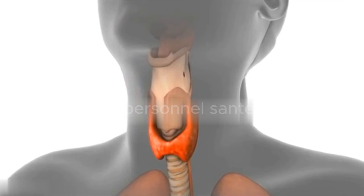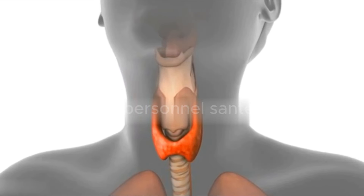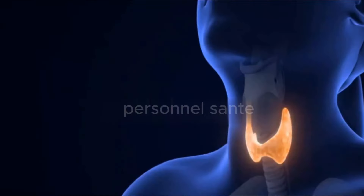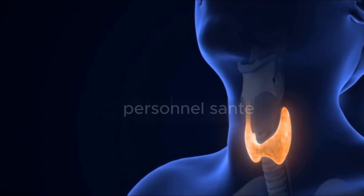The pituitary gland is, in turn, regulated by the hypothalamus through the secretion of TRH, thyrotropin-releasing hormone.